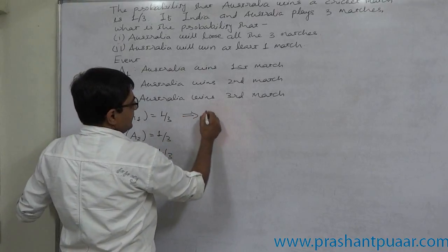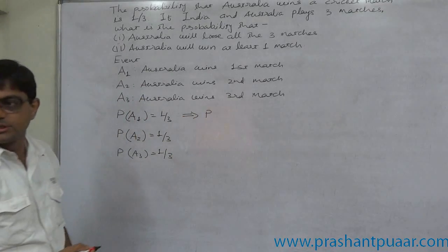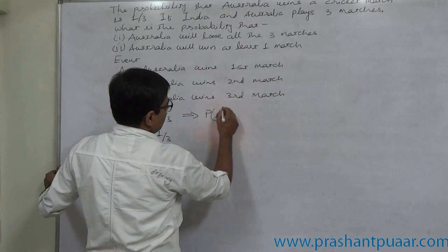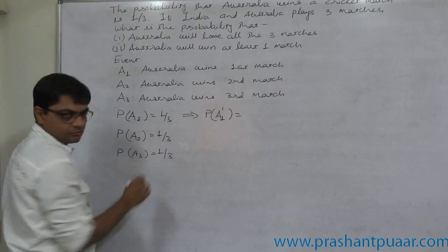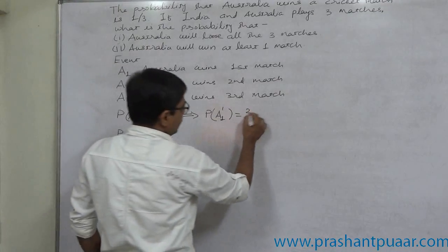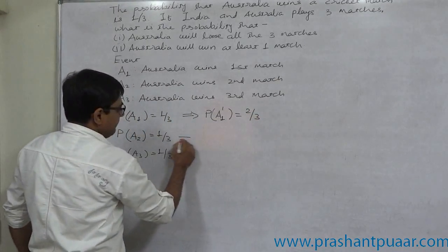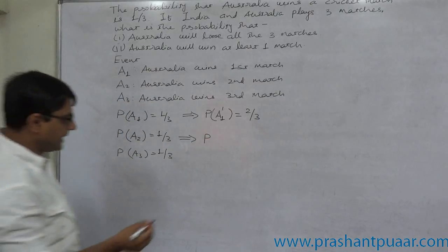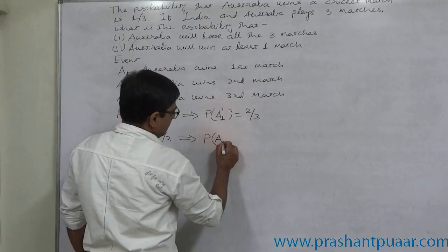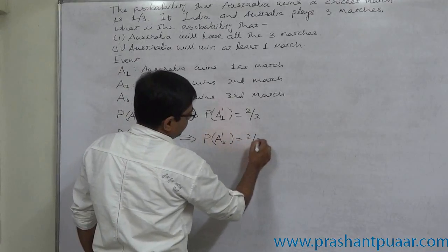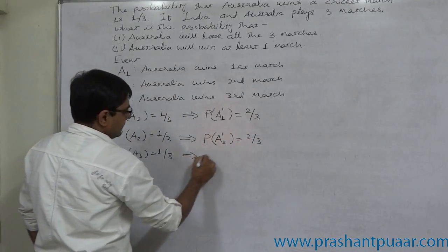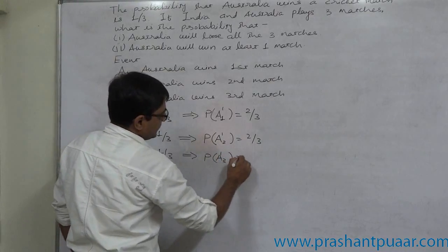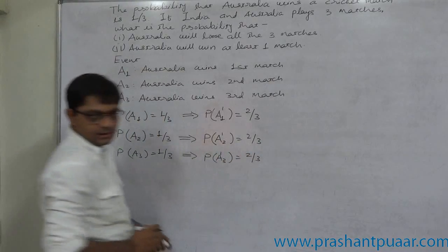The probability that Australia loses the first match, that is P(A1 complement), should be 1 minus 1/3, which means 2/3. Similarly, the probability that Australia loses the second match is also 2/3, and the probability that Australia loses the third match is 2/3.